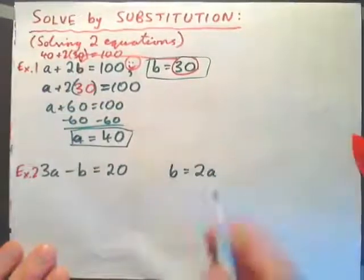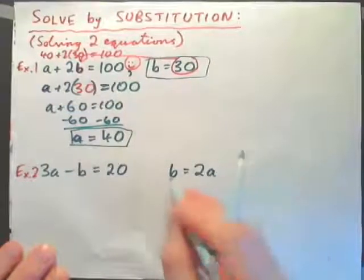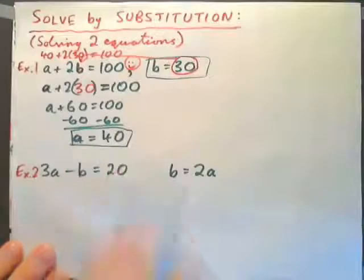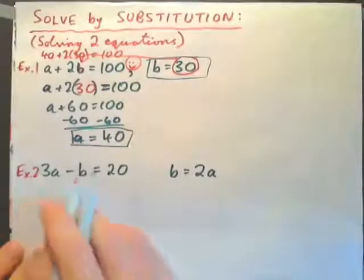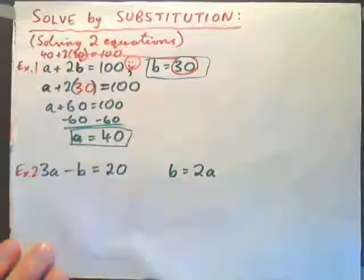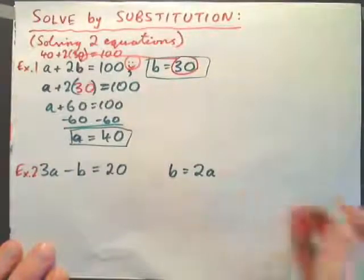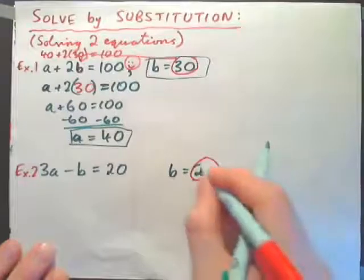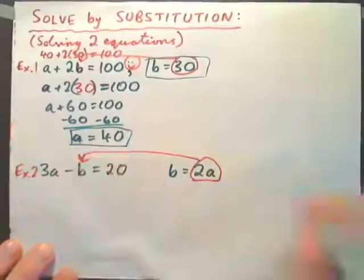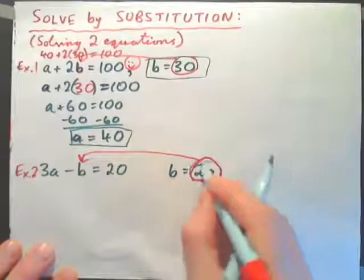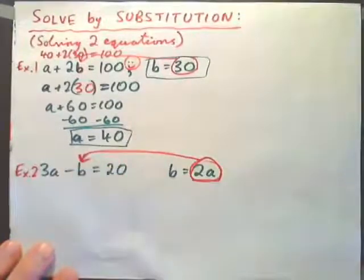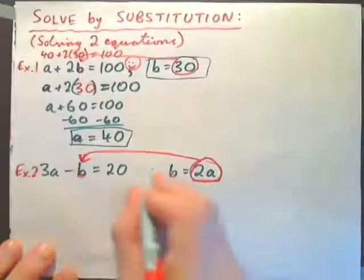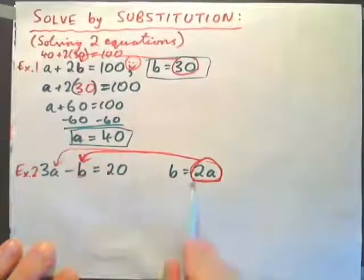Substitution, as we typically see it, will usually involve plugging in an expression for a variable. In example 2, 3 apples minus a banana equals 20 cents, and a banana equals 2 times an apple. We can take this expression for b, which is 2a, and substitute that in. The key question is: do I plug 2a in for b, or for a?